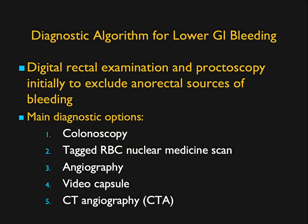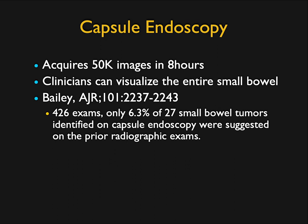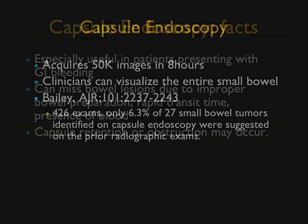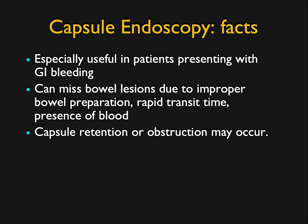Endoscopy is the study of choice for the esophagus and stomach in upper GI bleeding, but CT can be very valuable especially if the patient has contraindications. For lower GI bleeding, digital rectal exam and proctoscopy can initially exclude anal rectal sources. Main diagnostic options beyond this are colonoscopy, tagged red blood cell studies, classic angiography, video capsule endoscopy, and CTA. Capsule endoscopy was initially thought to be 100% sensitive and specific, generating about 50,000 images, but it's not as good as initially made out.